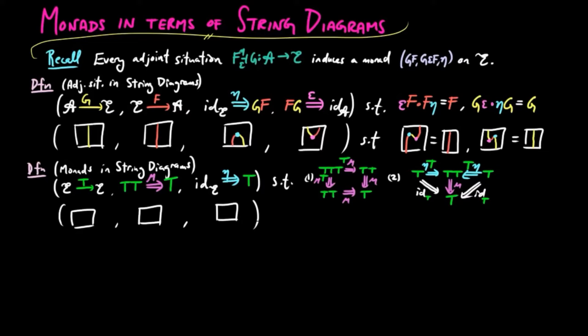In string diagrams, we have the endofunctor as the green string, the multiplication as the purple dot, and the unit as the light blue dot. And these diagrams satisfy the following equalities, where the first is the associative law for multiplication, and the second is the unit law.